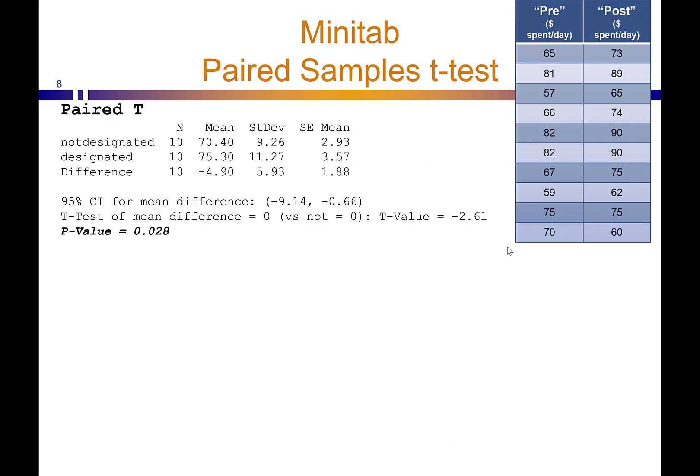We did that in Minitab, and you can see that if you were not designated as a super shopper versus if you were, folks that were designated as super shoppers were spending about $5 more. Is this difference statistically relevant? We go to the p-value, as we would for our other t-tests. If .05 is our threshold, this p-value is smaller than that. We would reject the null that these two are the same — in plain terms, we can say these two are different, and the super shopper program is the likely cause if the experiment was well designed.